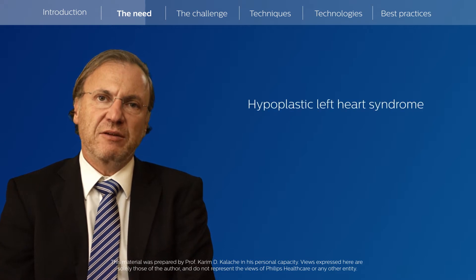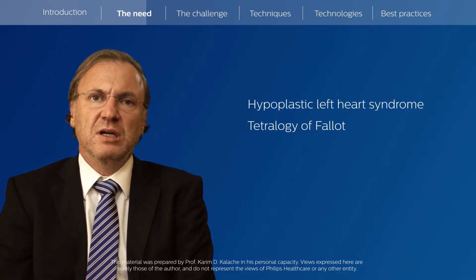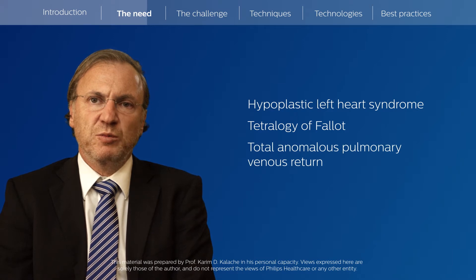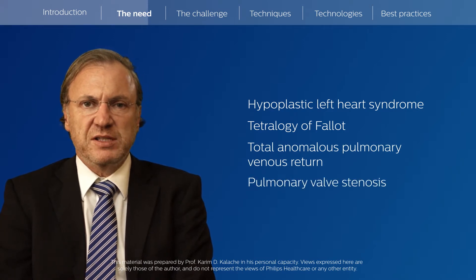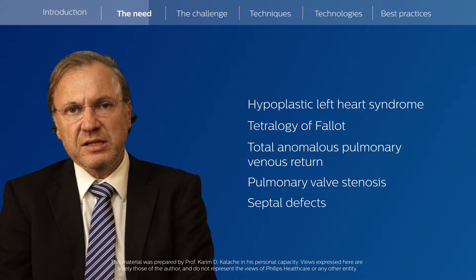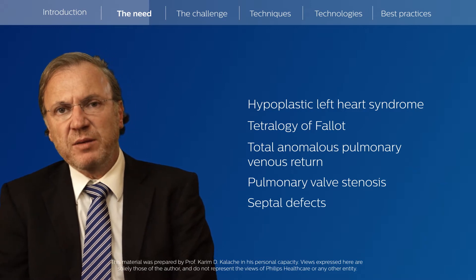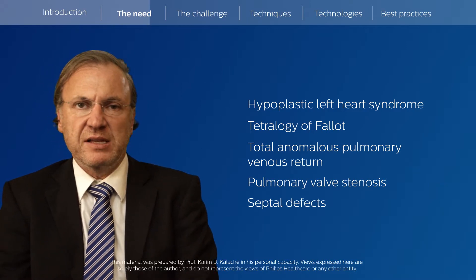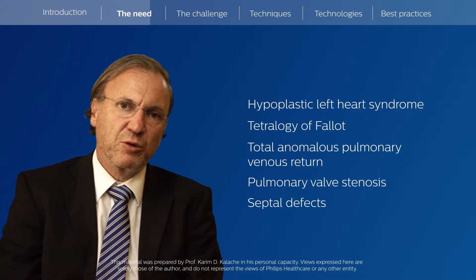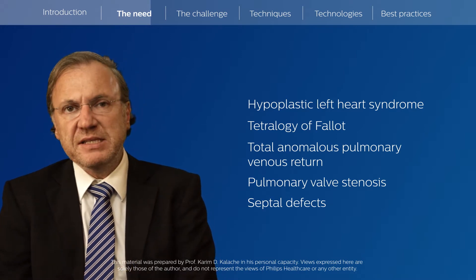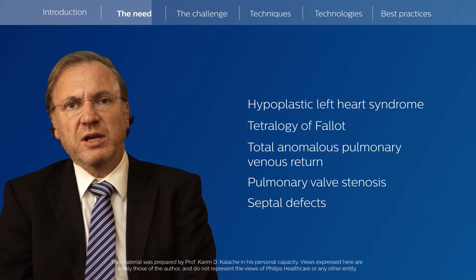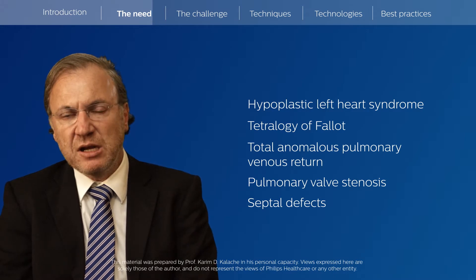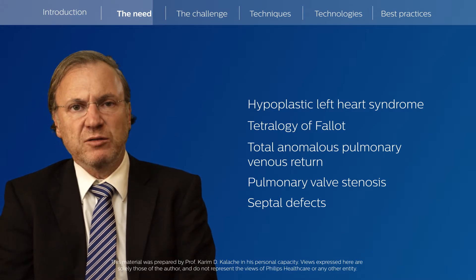The ultrasound or fetal medicine specialist needs to know which congenital cardiac anomalies are more likely to occur in these patients. These include hypoplastic left heart syndrome, tetralogy of Fallot, total anomalous pulmonary venous return, pulmonary valve stenosis, and septal defects. Some are major, some have a better prognosis, some can be seen in the four-chamber view, but most require visualization of the outflow tract.